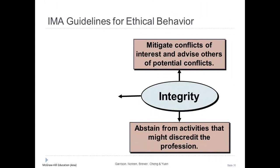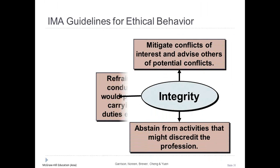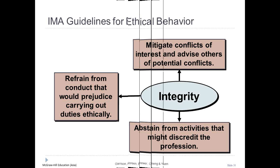The third area is Integrity: management accountants must mitigate conflicts of interest, advise others of potential conflicts, refrain from conduct that would prejudice carrying out duties ethically, and abstain from activities that might discredit the profession. The fourth area is Credibility: management accountants must communicate information fairly and objectively, disclose all relevant information that could influence a user's understanding of reports and recommendations, and disclose delays or deficiencies in information timeliness, processing, or internal controls.